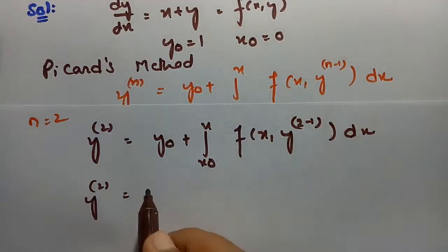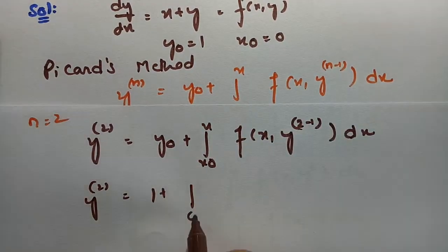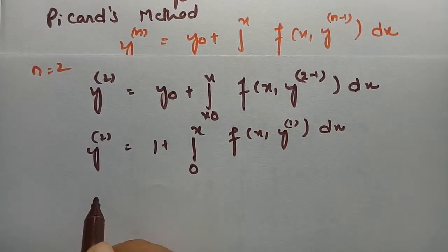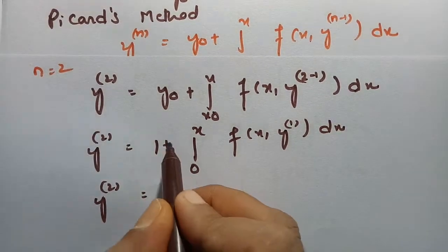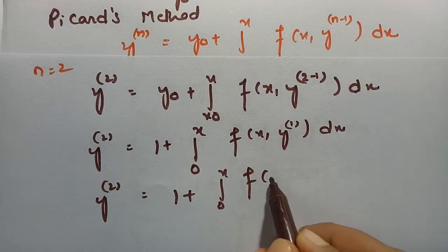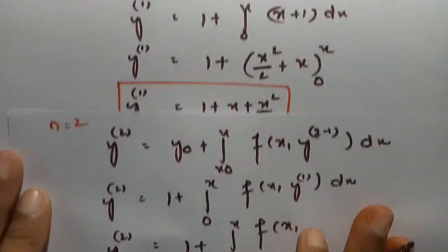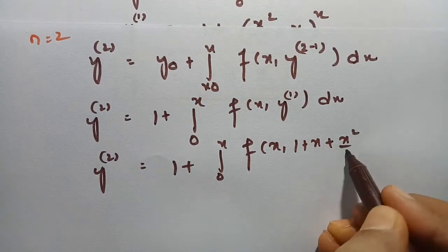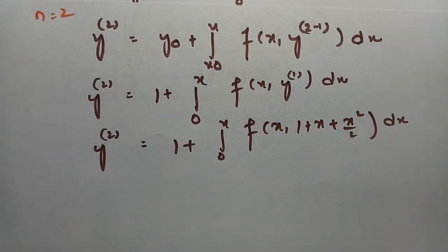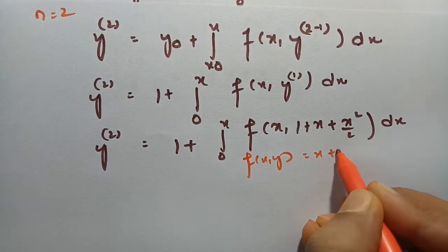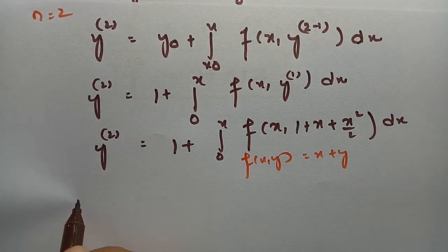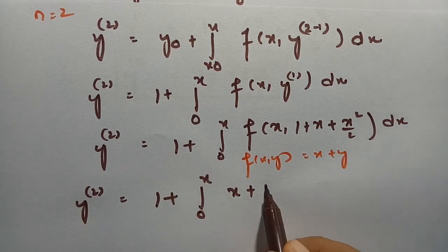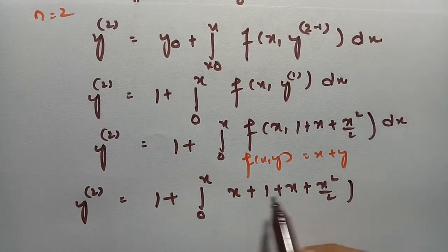So the second approximation y₂ = 1 + integral from 0 to x of f(x, y₁) dx. The first approximation y₁ = 1 + x + x²/2. Since f(x, y) = x + y, we substitute to get 1 + integral from 0 to x of (x + 1 + x + x²/2) dx, which simplifies to 1 + integral from 0 to x of (1 + 2x + x²/2) dx.